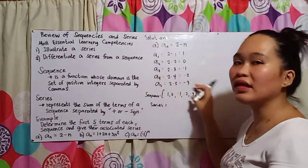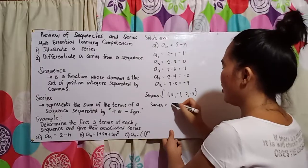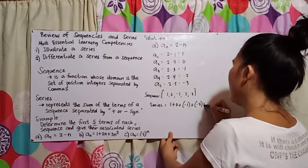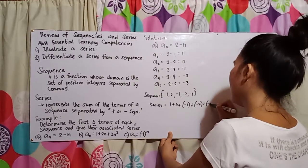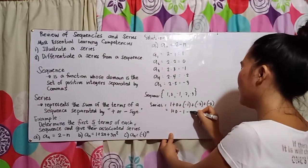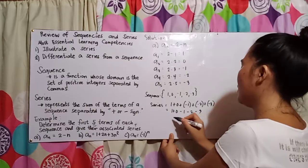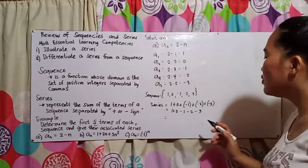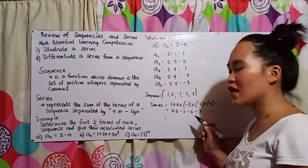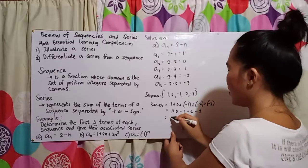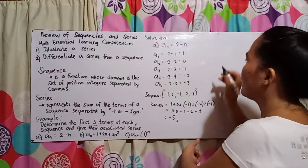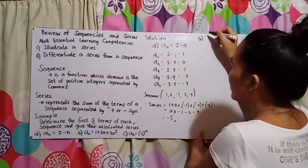For the series, we just add all the terms of the sequence: 1 plus 0 plus negative 1 plus negative 2 plus negative 3. That becomes 1 plus 0 minus 1 minus 2 minus 3. So: 1 plus 0 is 1, minus 1 is 0, minus 2 is negative 2, minus 3 is negative 5. So our series result is negative 5.